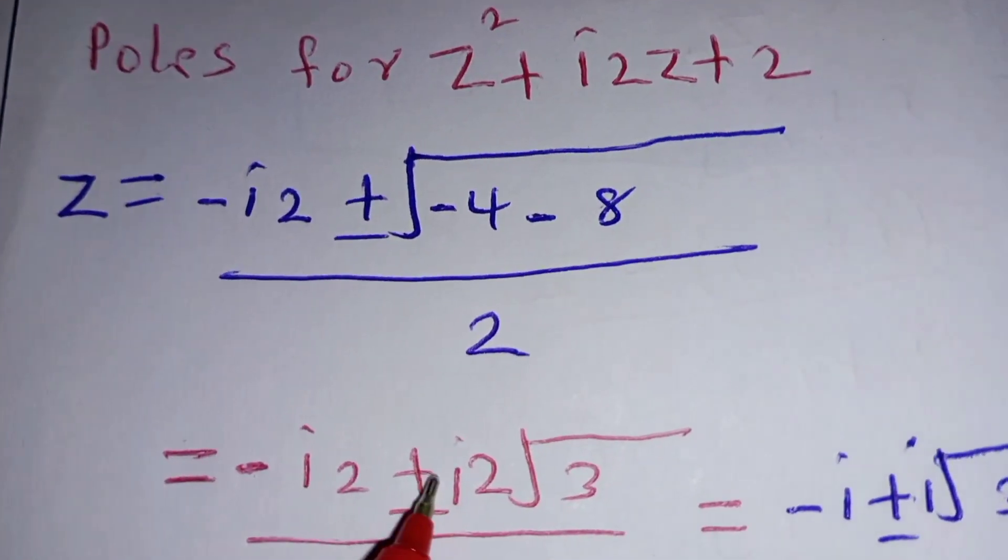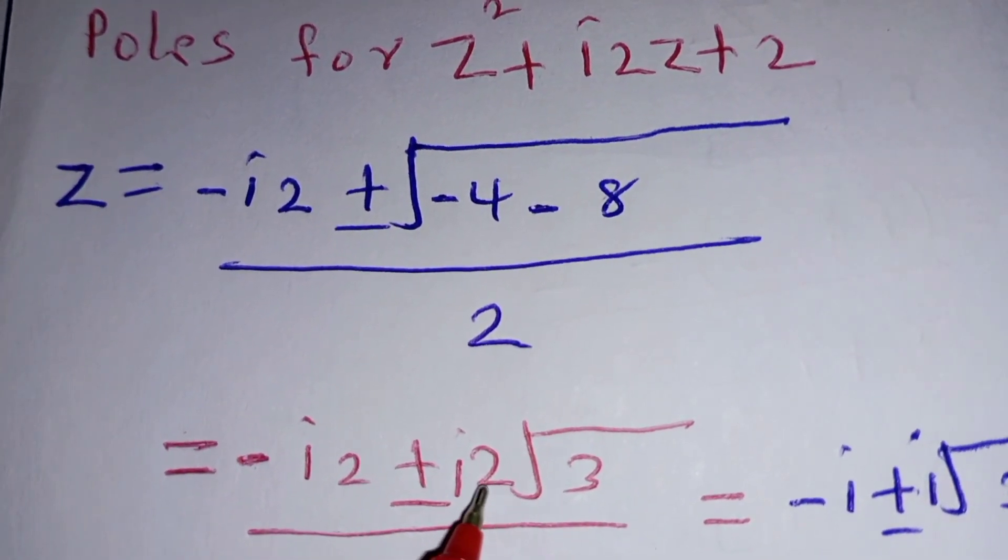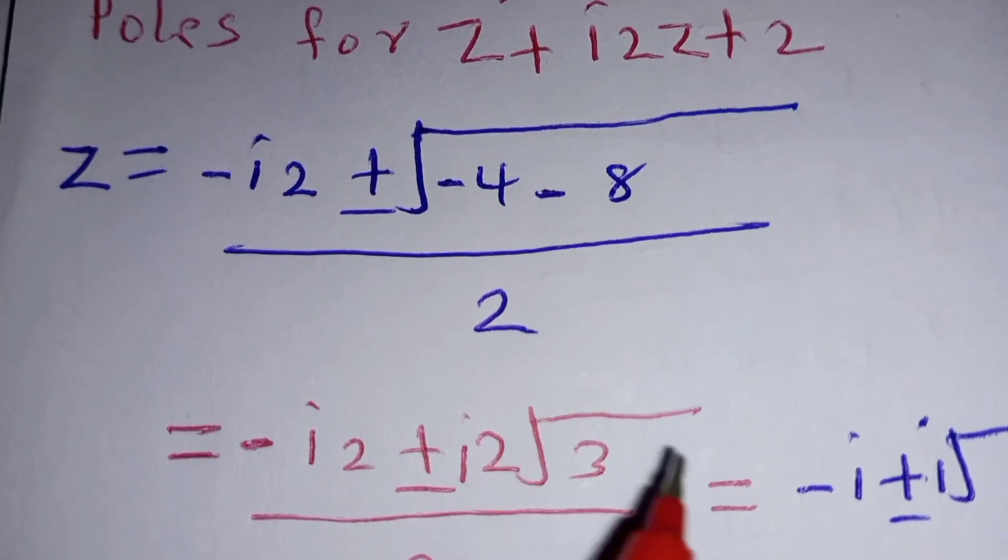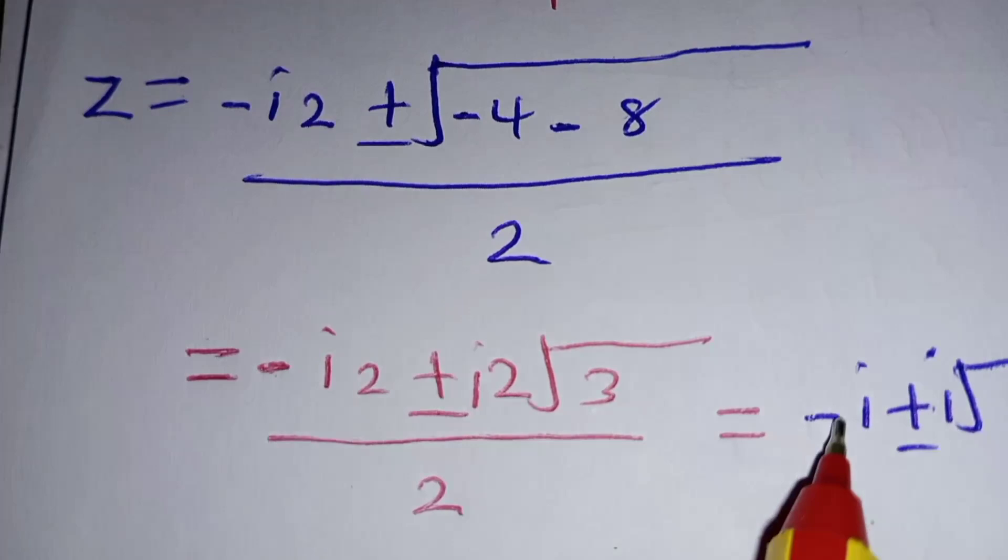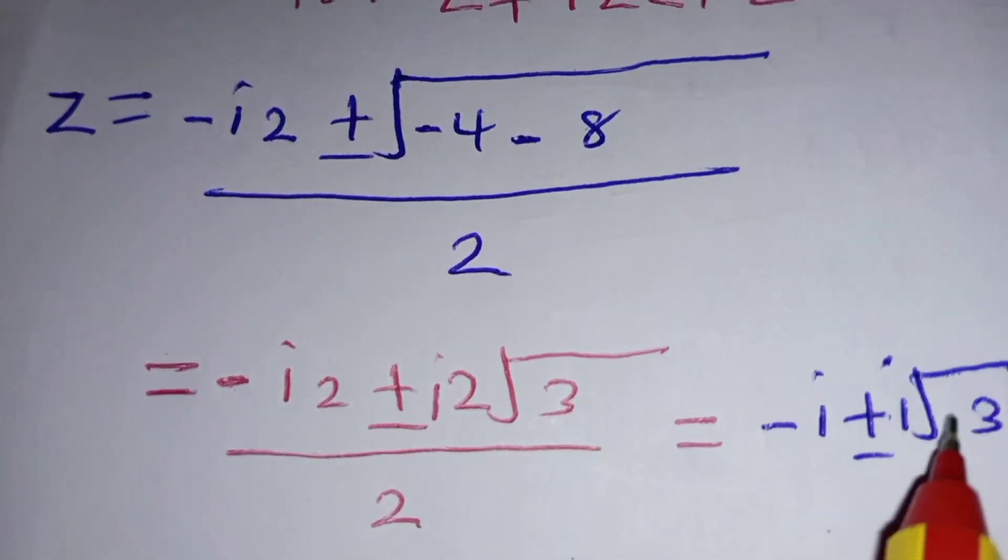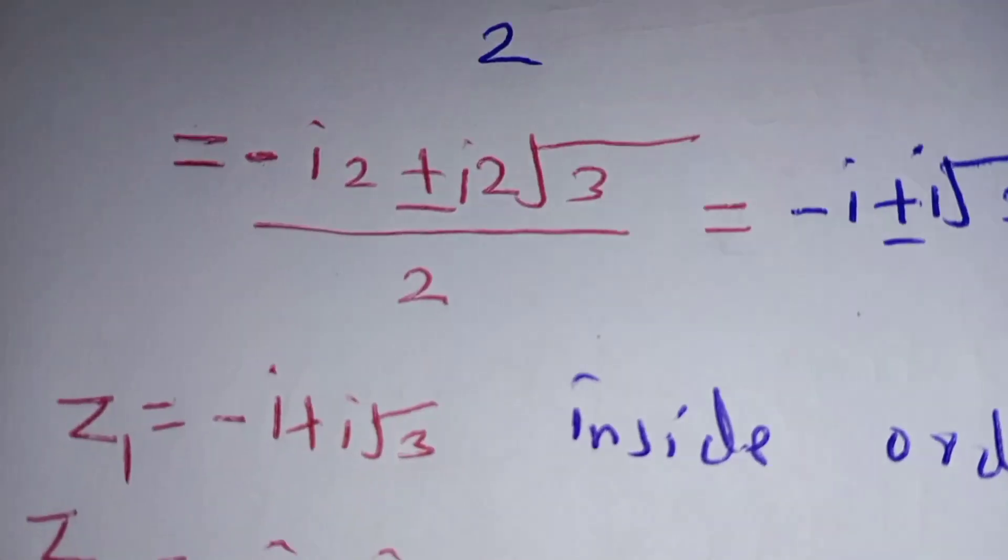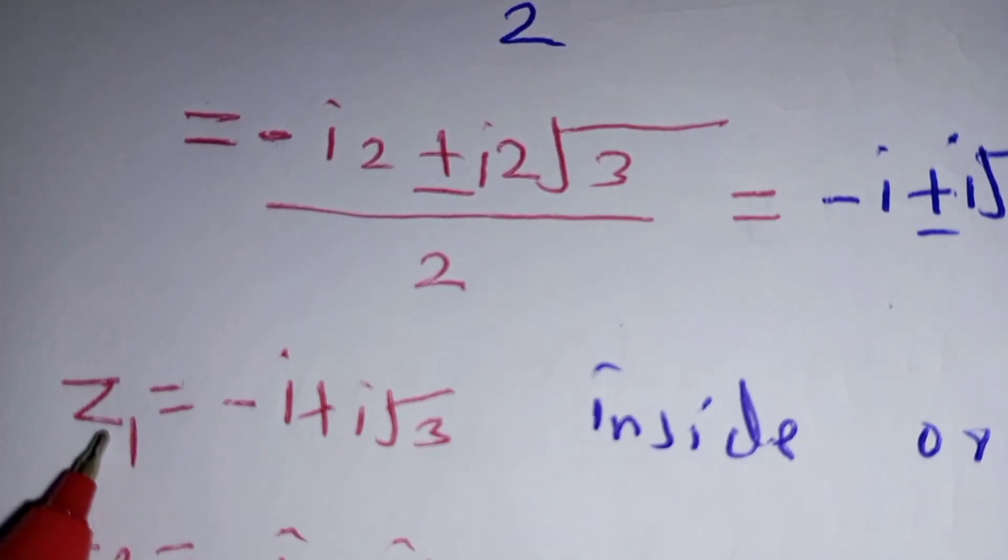So the square root of negative 4 is 2i, and we get 2i times the square root of 3, divided by 2. The 2s cancel, so we are left with i times the square root of 3.